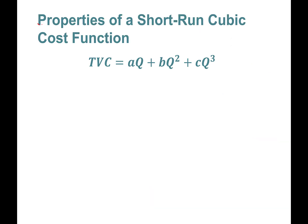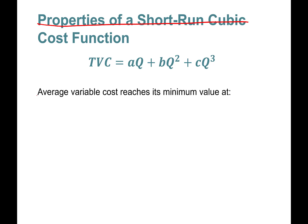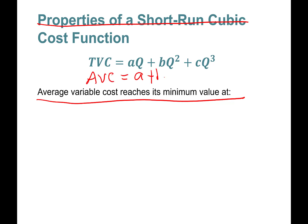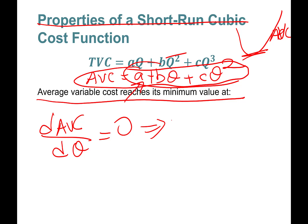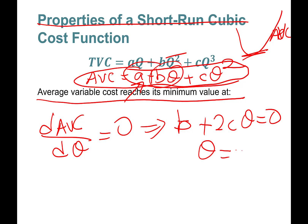Now let's talk about the properties of the short-run cubic cost function. Average variable cost — which equals a plus b·q plus c·q² — reaches its minimum. To find it, take the first derivative of AVC with respect to q and set it equal to zero: b plus 2c·q equals zero, giving q equals negative b over 2c as the minimum point of the AVC curve.